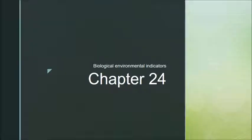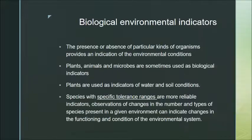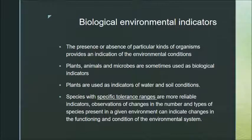In chapter 24, we're going to look at biological environmental indicators — using living things to indicate the health of the environment. We mainly look at the presence or absence of particular kinds of organisms, but we can also look at the population of different organisms to give us an indication of environmental conditions. Plants, animals, microbes, and invertebrates can all be used at different times as indicators.